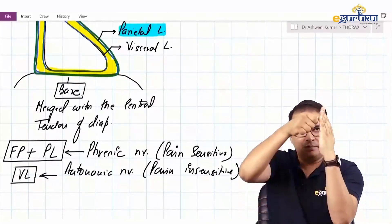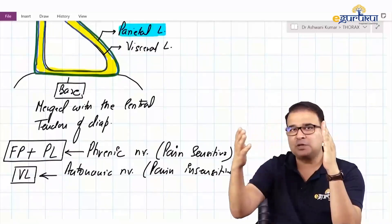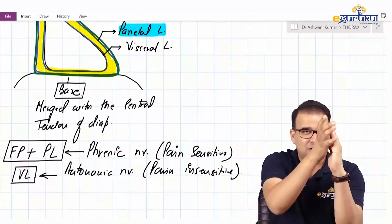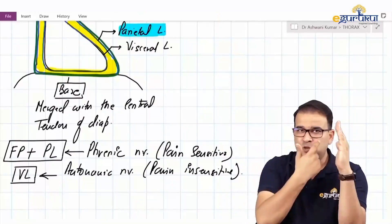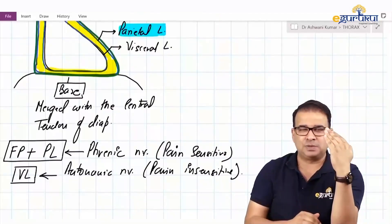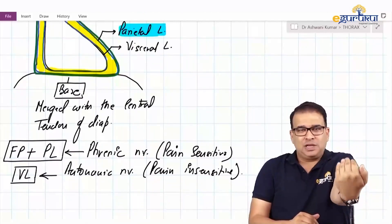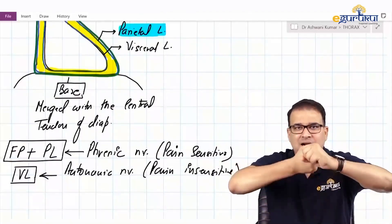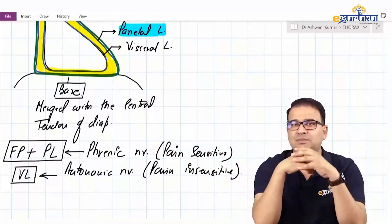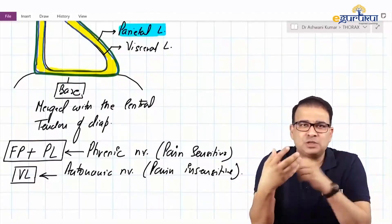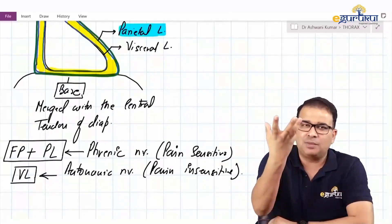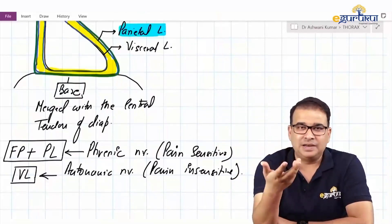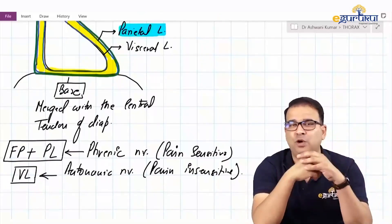If we remove the fibrous pericardium from the heart tube, the parietal pericardium goes with it, and we are left with only the visceral pericardium covering the heart tube. Now imagine the folding of the heart tube takes place. The arterial end and the venous end come close to each other — which is obvious, because at the upper border of the heart we have the ascending aorta and also the superior vena cava, indicating that the arterial and venous ends came close during folding.